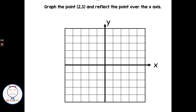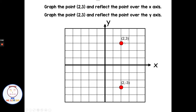We have: graph the point (2, 3) and reflect it over the x-axis. So we put it on our ordered pair at (2, 3) — right 2, up 3. To reflect it over the x-axis, I start being 3 above the x, and if I flip it over, I become 3 below the x — that would be my new point. Going back to the original point (2, 3), if asked to reflect it over the y-axis: I'm 2 to the right of the y, I flip it over, and I become 2 to the left of the y. That's an example of reflection.